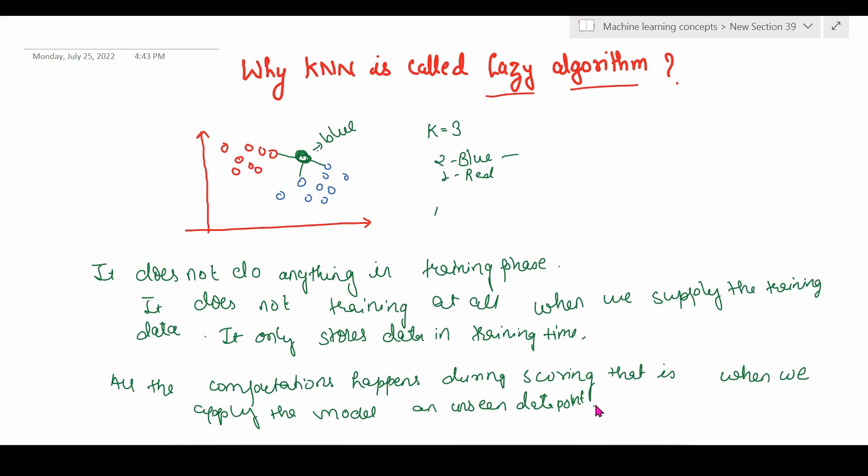It's called the lazy algorithm because it doesn't do anything at training time. As soon as new data points come, it starts finding distances and doing all the computation. This is the reason behind the lazy algorithm. Thank you.